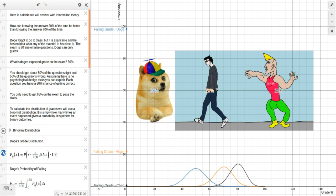How can knowing the answer 20% of the time be better than knowing the answer 70% of the time? So here's our scenario. Doge forgot to go to class, but it is exam time and he has no idea what any of the material in his class is. The exam is 50 true or false questions.